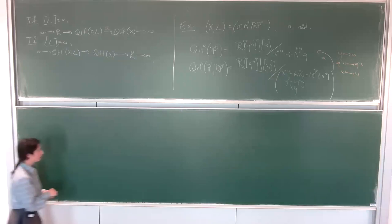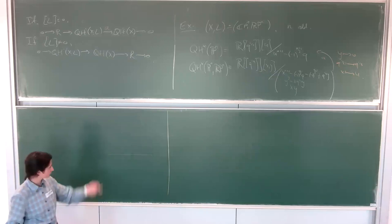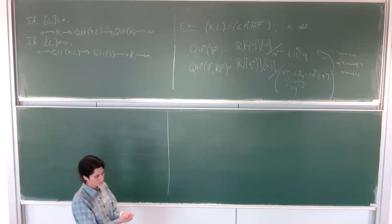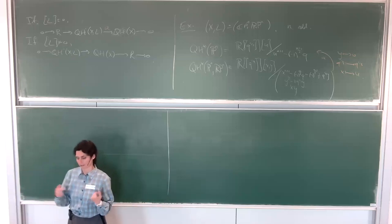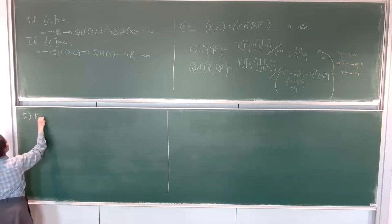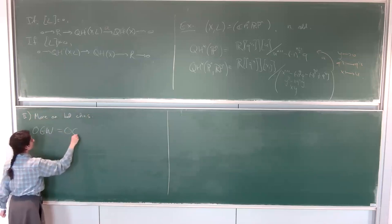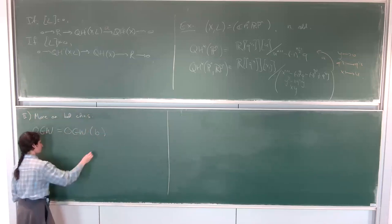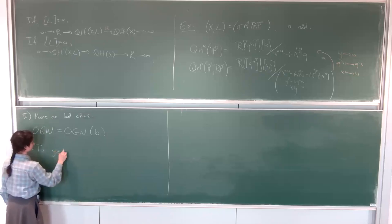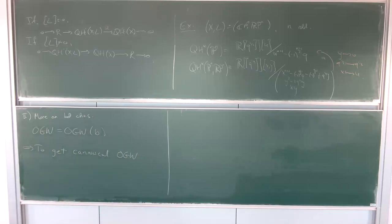Finally, I want to say that at the very least our construction depends on a bounding chain. It secretly depends on a lot of choices I didn't tell you, but it primarily depends on a choice of a bounding chain. A bounding chain was the recipe that tells me which little disks I need to count together in order to get an invariant. So the open Gromov-Witten invariants we get depend on a choice of bounding chain.